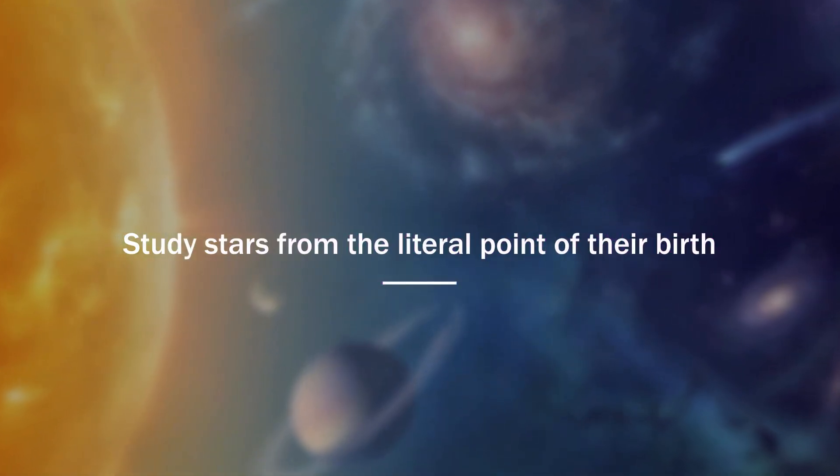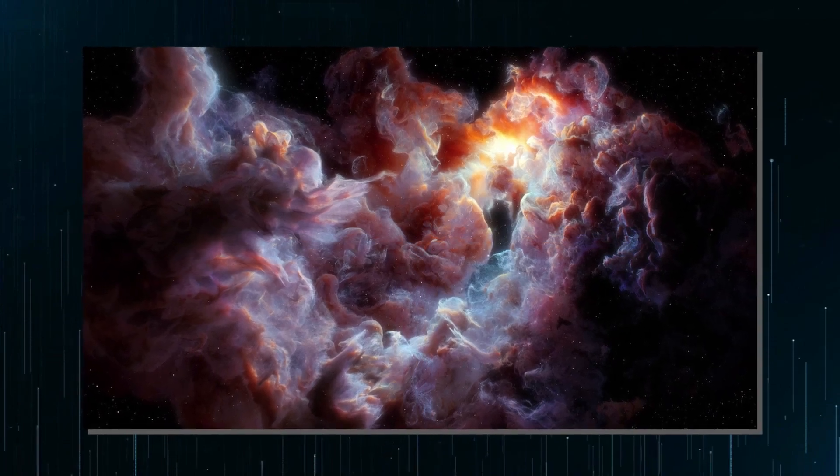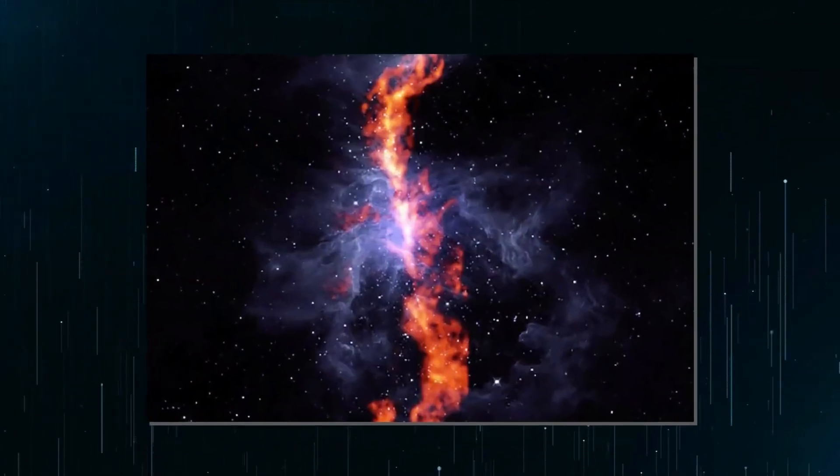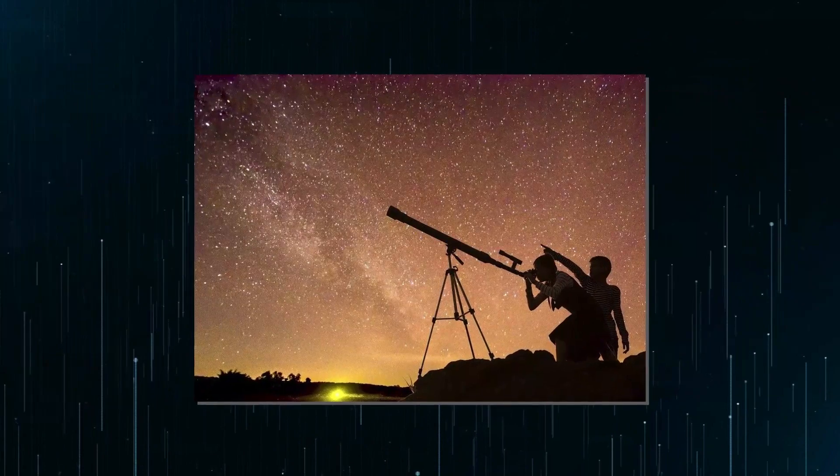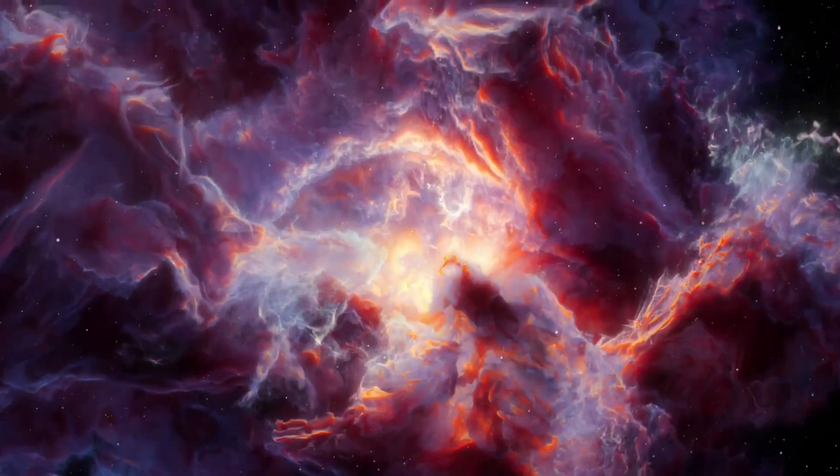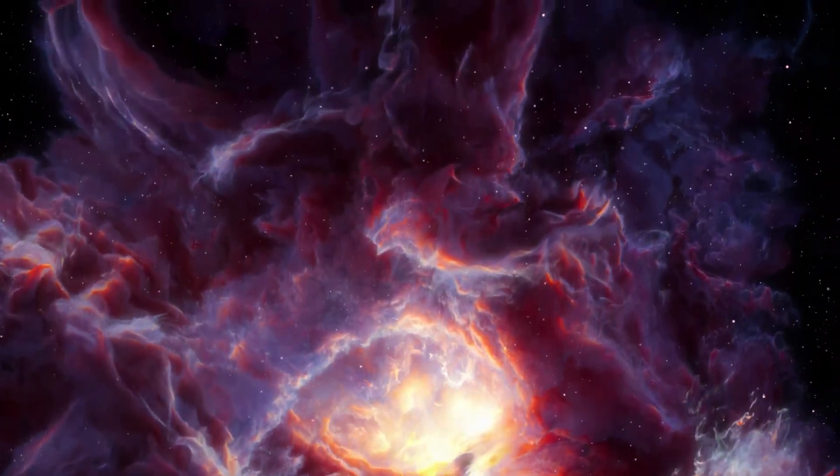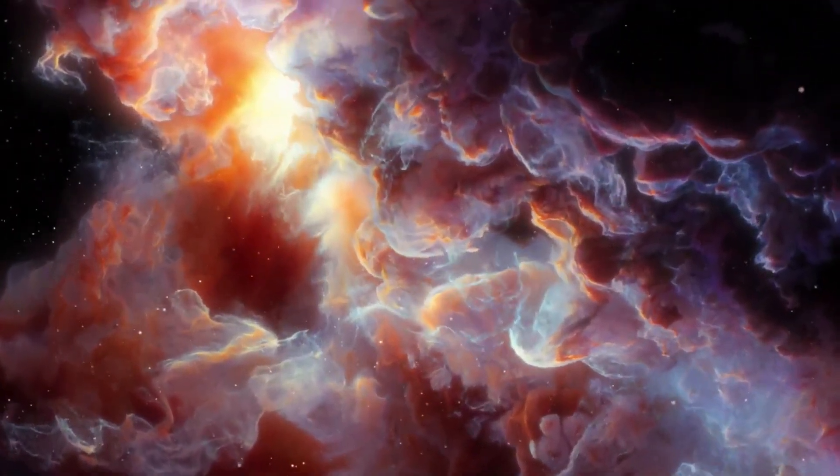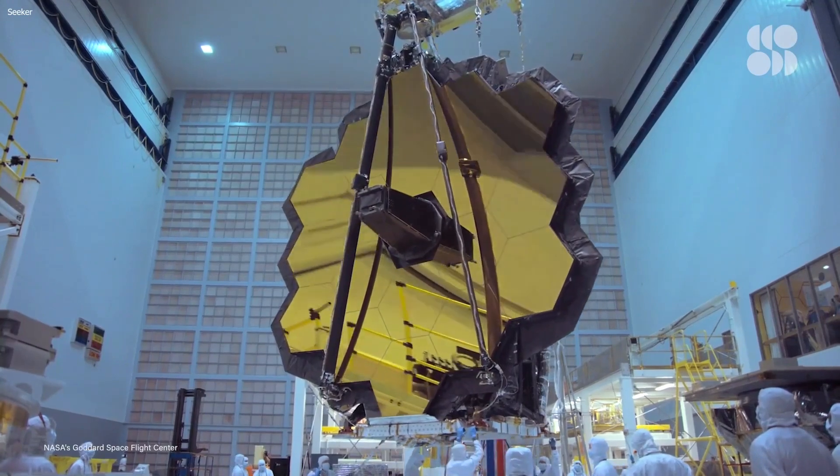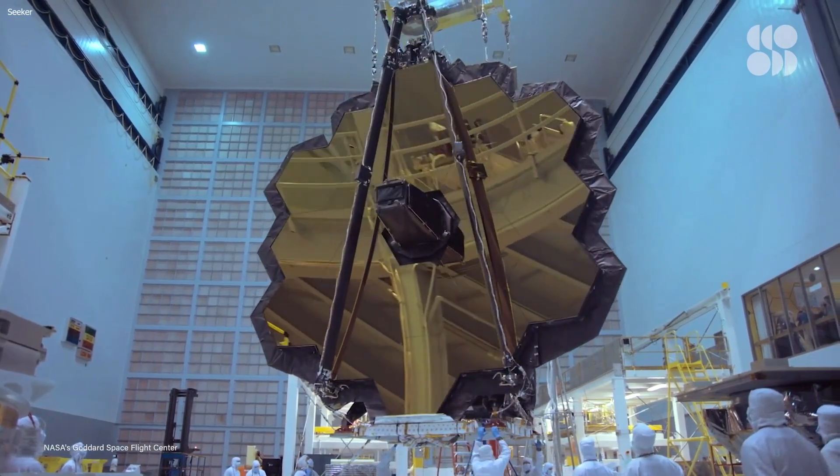Study stars from the literal point of their birth. Stars form from dense clouds of gas and dust, known as stellar nurseries. These clouds are so dense that visible light is unable to penetrate them, making it difficult for scientists to observe these regions using conventional telescopes. However, infrared light can pass through the dusty clouds more easily than visible light can, giving scientists a unique view into the heart of these stellar nurseries. The infrared capabilities of the Webb telescope will enable scientists to study these regions in much greater depth than was previously possible.